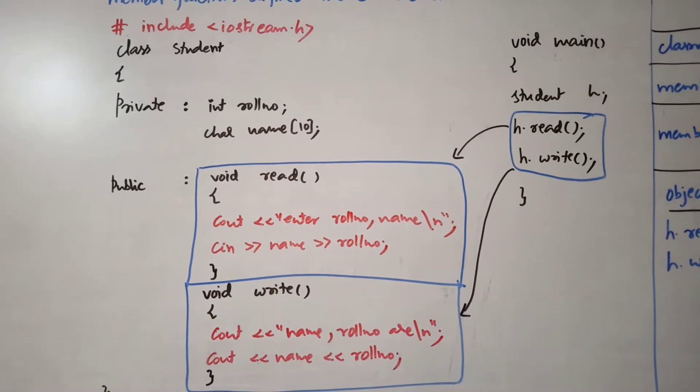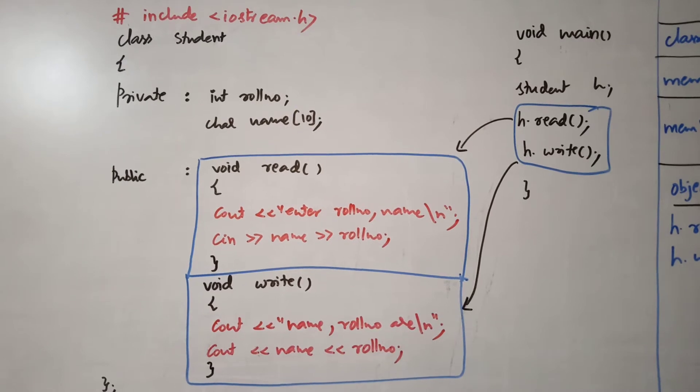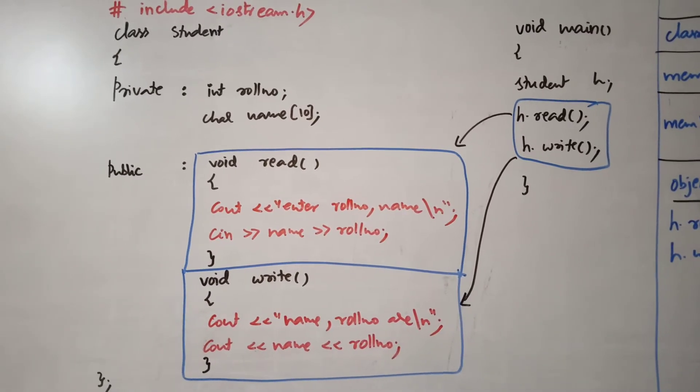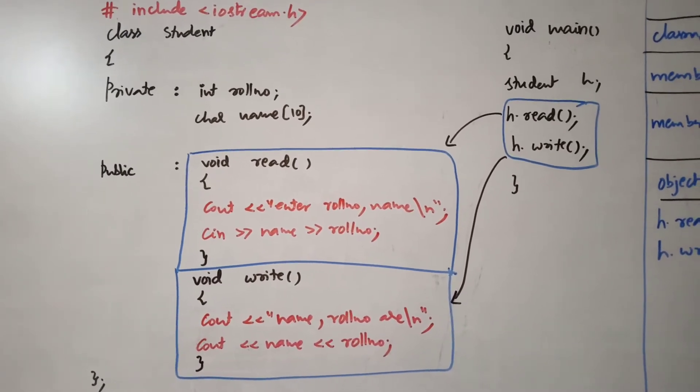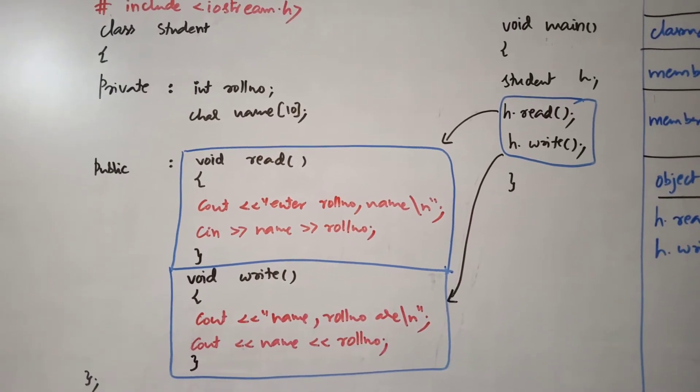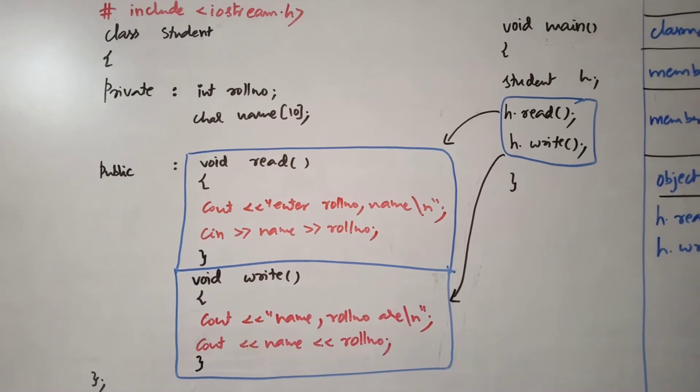You copy the program first, always. The class definition part is on left hand side and the main is on the right hand side. In the notes you copy the class definition and below you copy the main part.